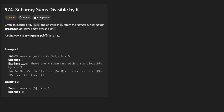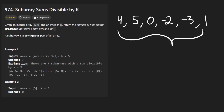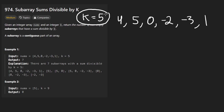The idea is: given an integer array of nums — let's take a look at the first example given — we have an integer array with six numbers and we're given k equal to five. We want to count the number of non-empty subarrays that have a sum divisible by k.